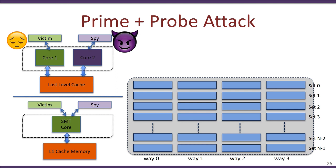In a prime and probe attack, we consider two scenarios. In the first, a victim process runs on one core and a spy process runs on another processor core, both sharing the same last-level cache. In the second setup, both the victim and spy run on the same processor core — a symmetrically multi-threaded, or hyper-threaded, core — sharing the common L1 cache.